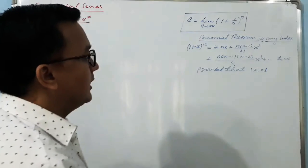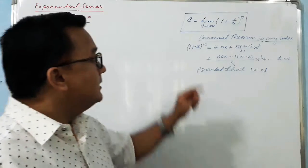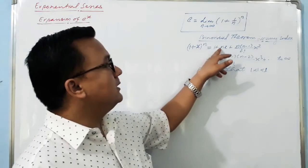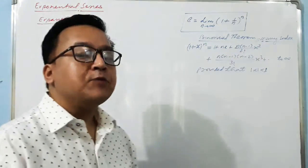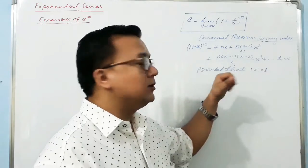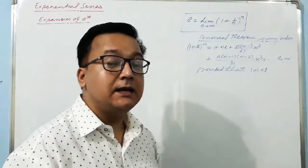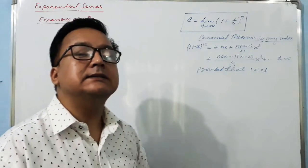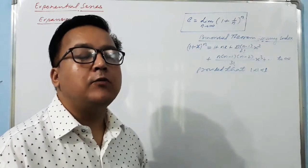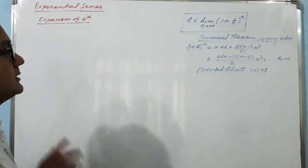We also need the binomial theorem for any index. The binomial theorem states: (1 + x) raised to power n equals 1 plus nx plus n(n−1) over 2! times x squared plus n(n−1)(n−2) over 3! times x cubed, and so on to infinity — provided that the modulus of x is less than 1. If x is greater than 1, this theorem will not provide the accurate value.